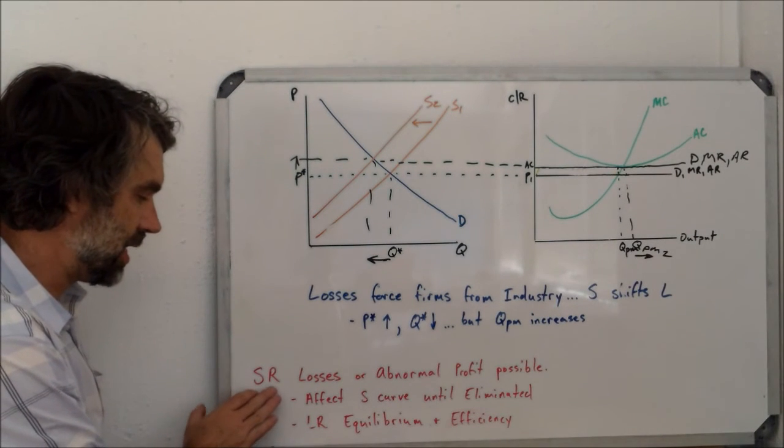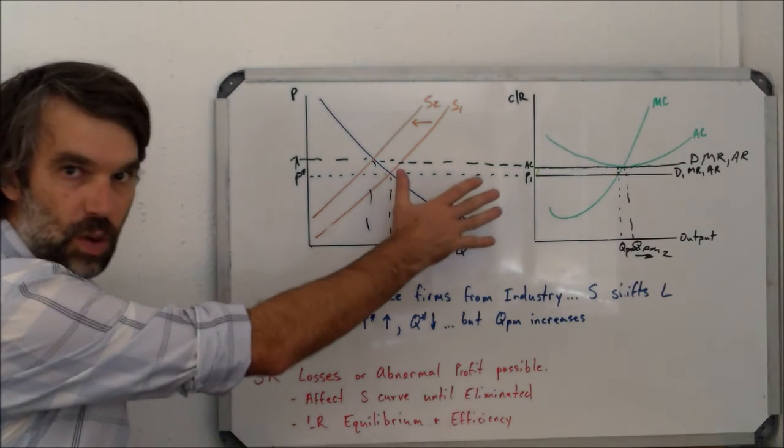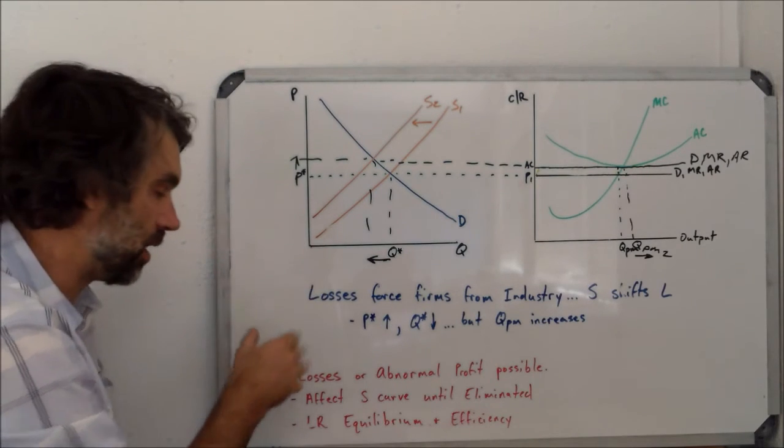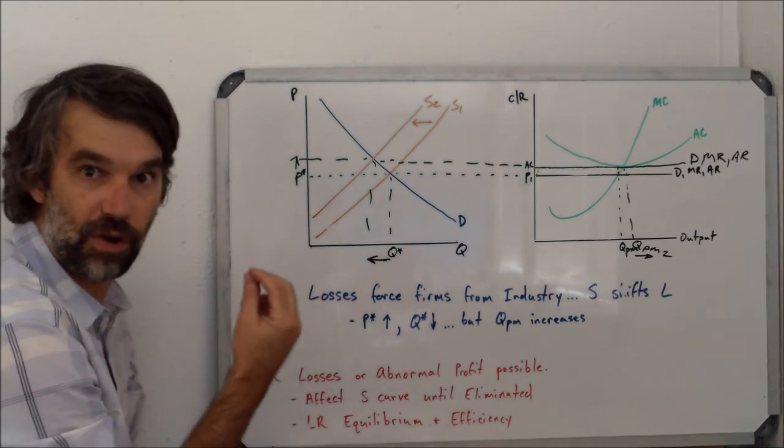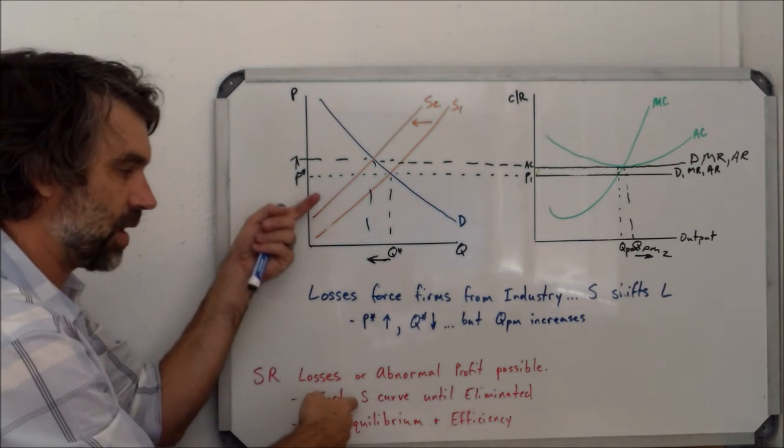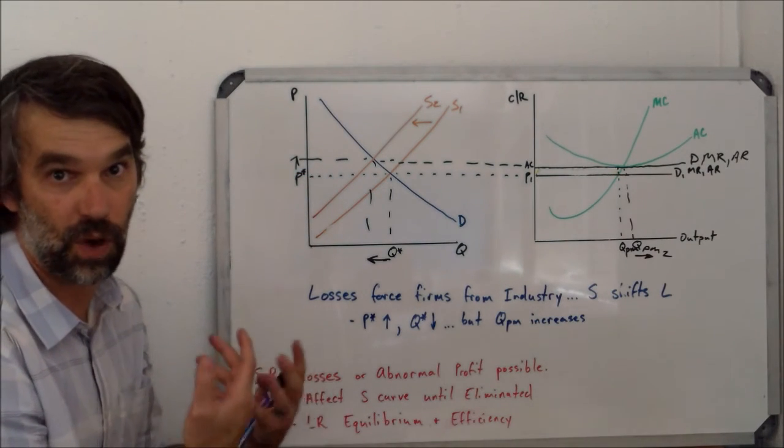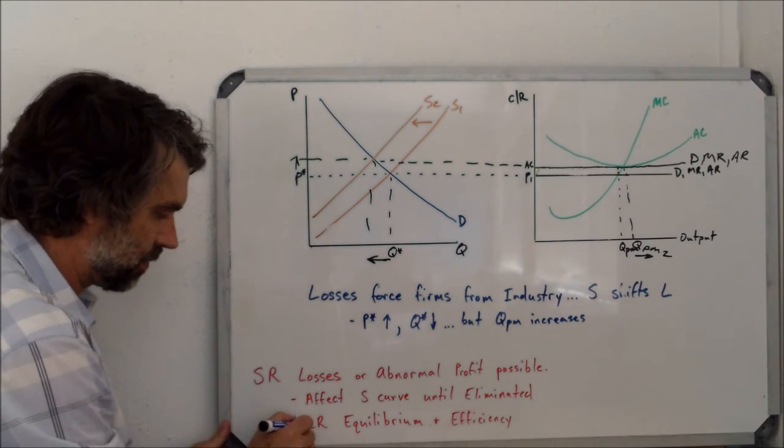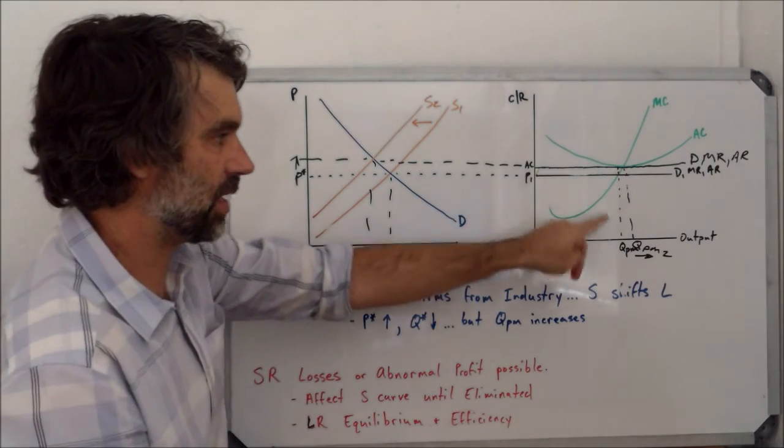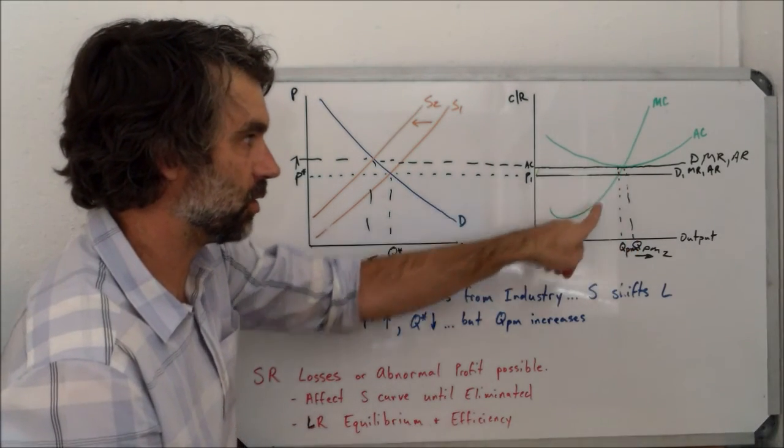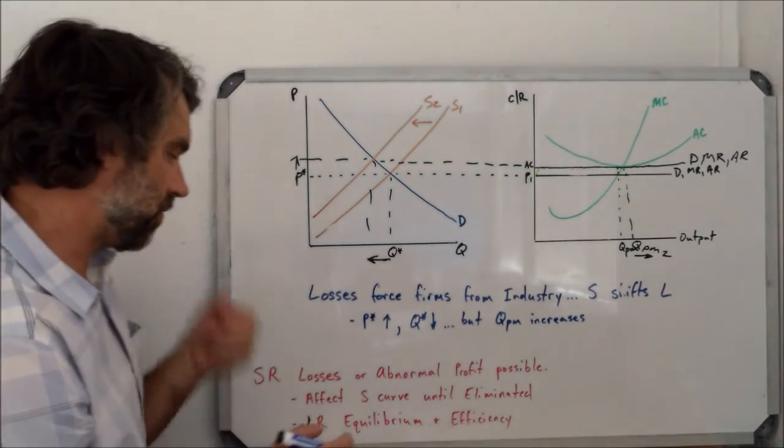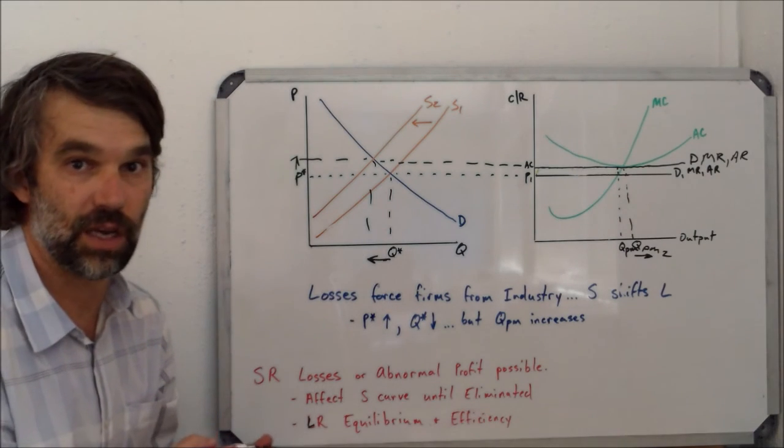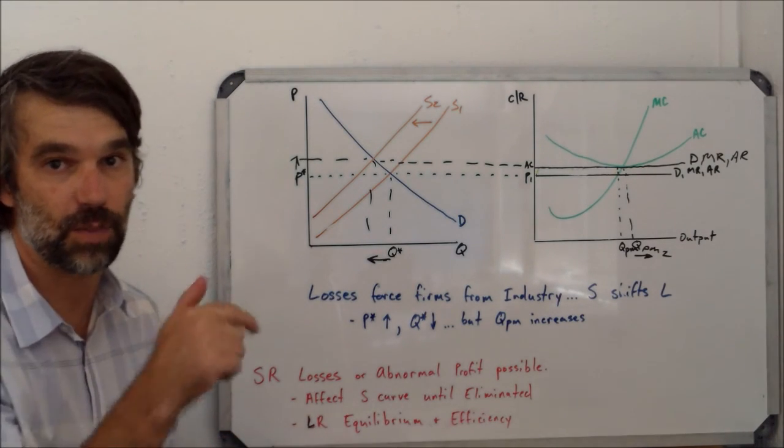So ultimately, what we see is that in the short run, you can lose money like what we were showing here, or you can have abnormal profit like we showed on a previous whiteboard, but that abnormal profit or loss is going to affect the supply curve in the industry until that abnormal profit or loss is eliminated. So in long run equilibrium, which is what we find when the firm is producing where QPM is equal to the lowest point of AC, what we find are some interesting effects on efficiency, and that's going to be the topic of the next video. So pay attention to that. If you have any questions, leave them in the comments below.